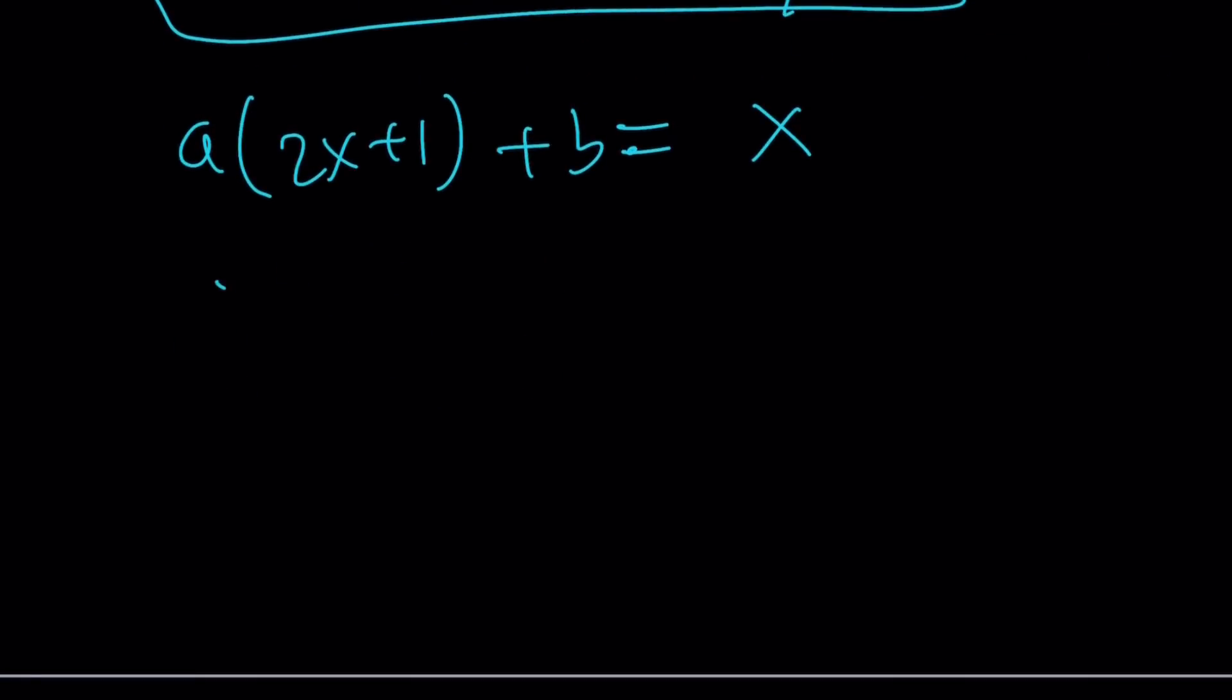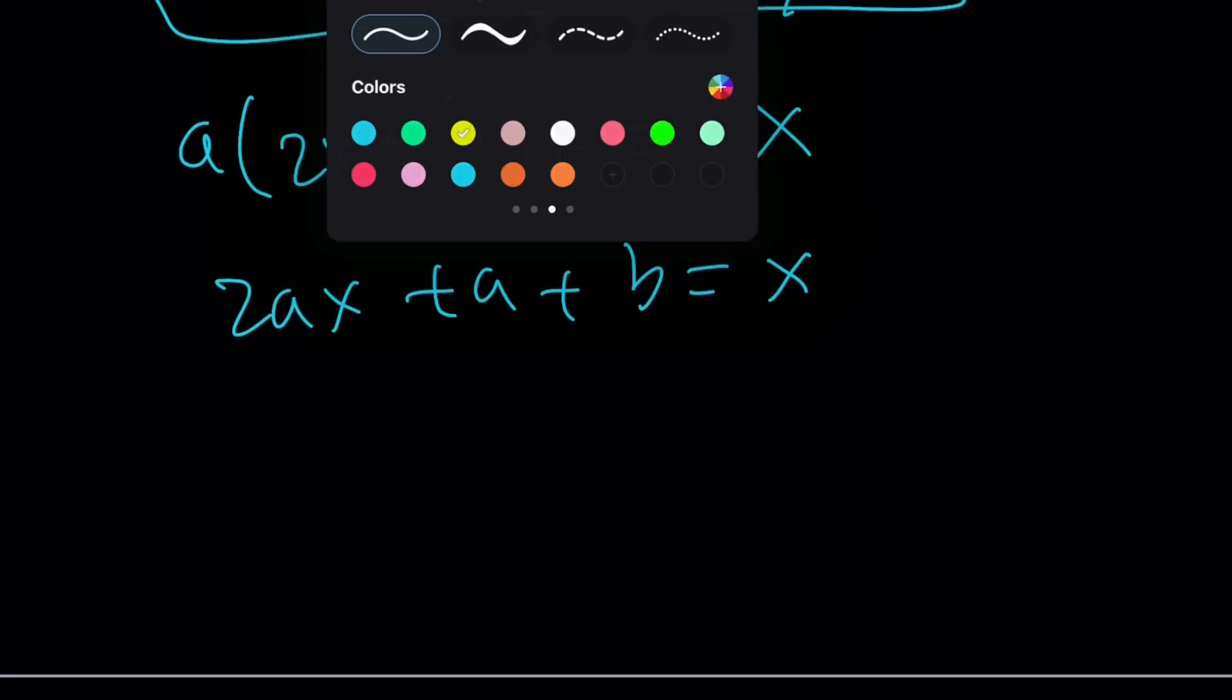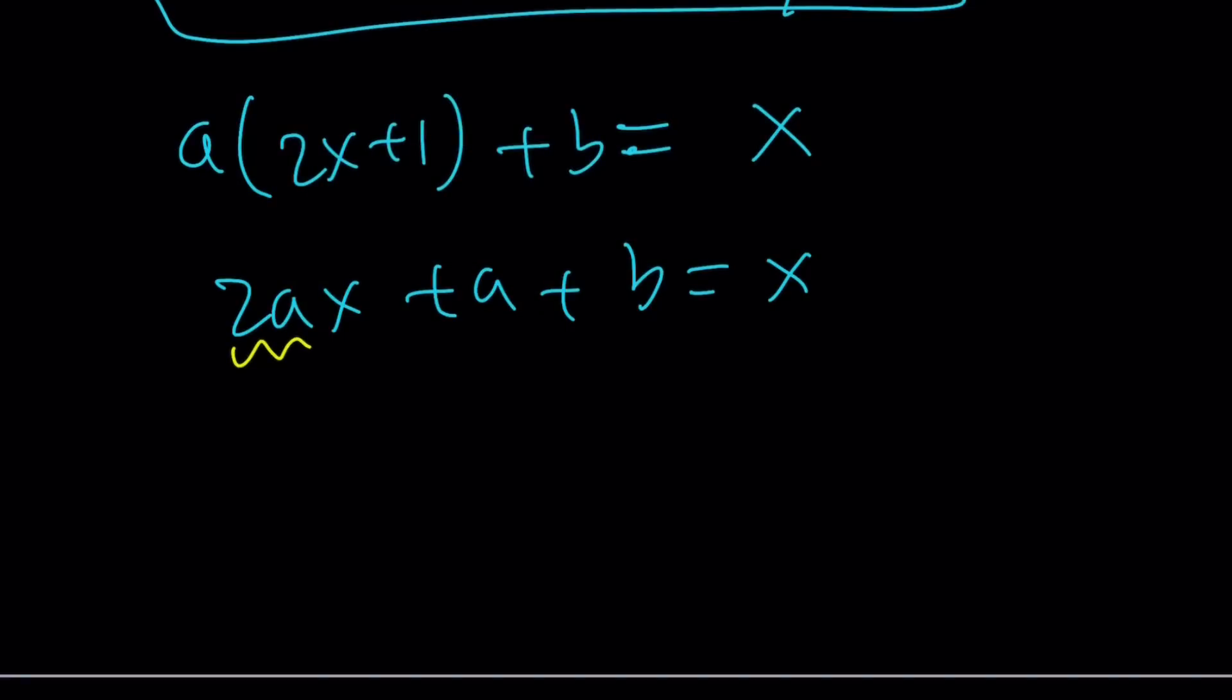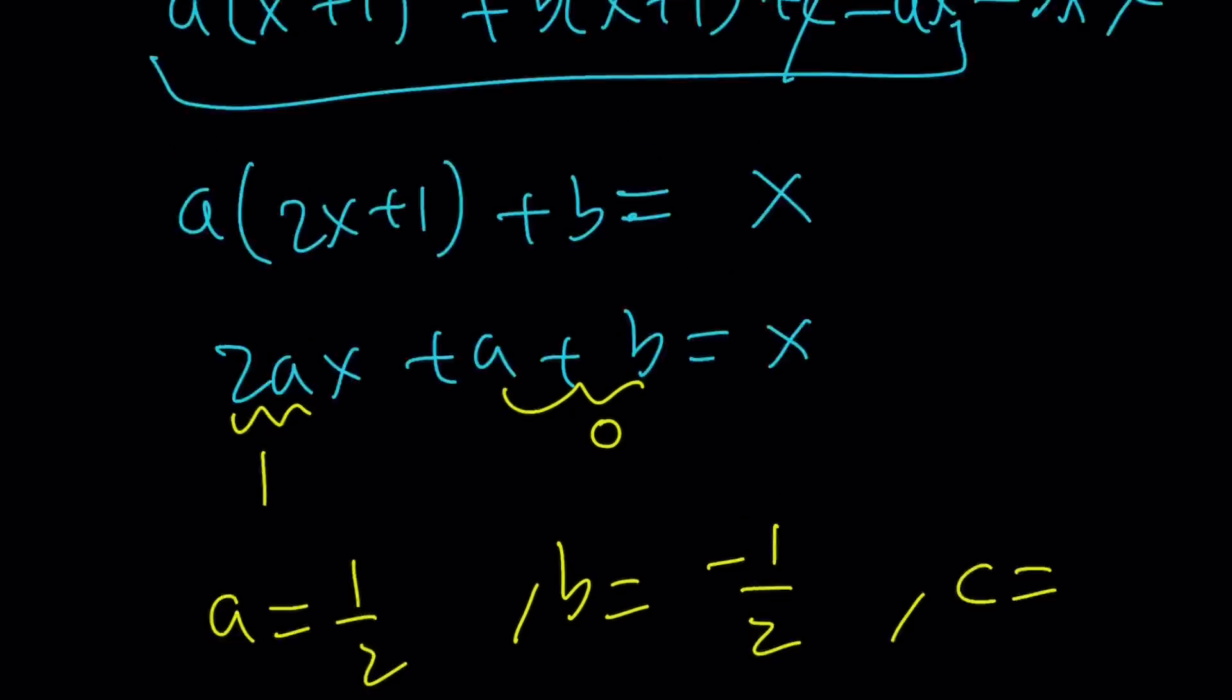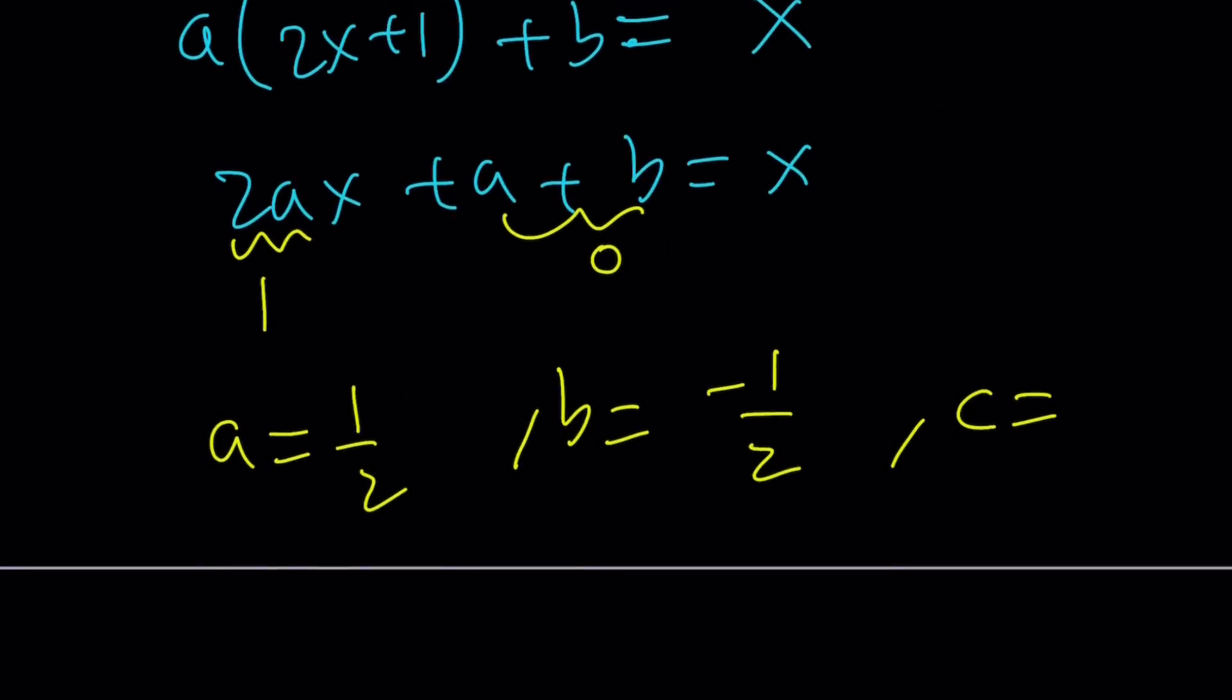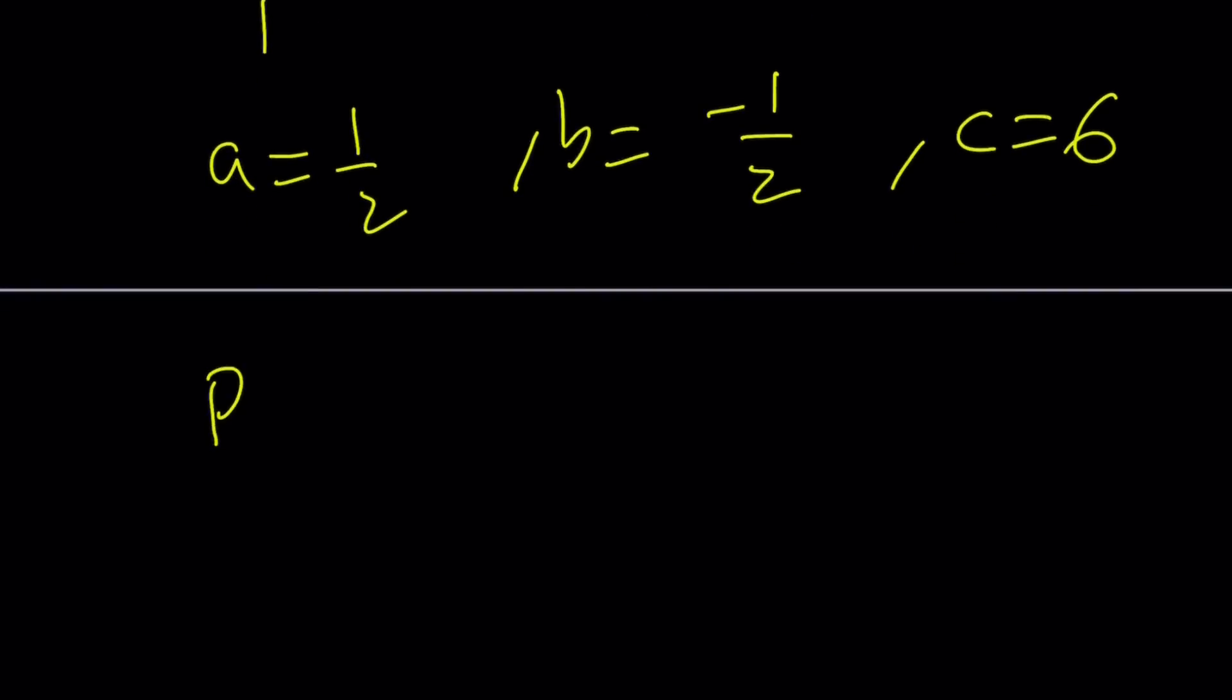Now, we can do the following. 2ax plus a plus b equals x. The coefficient of x must be 1, which means a is 1 half. Constant term must be 0. That means b equals negative 1 half. And if you plug in the value of P of 2, you're going to get c is equal to 6. And this gives you the same result as before.